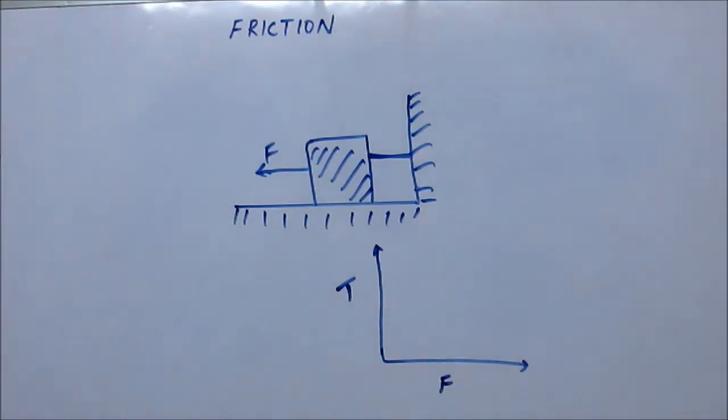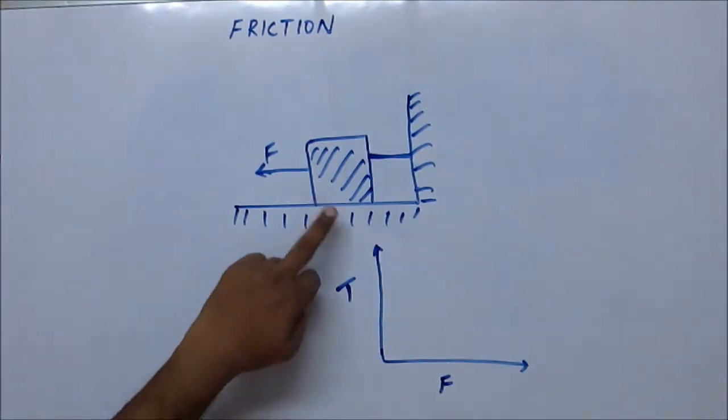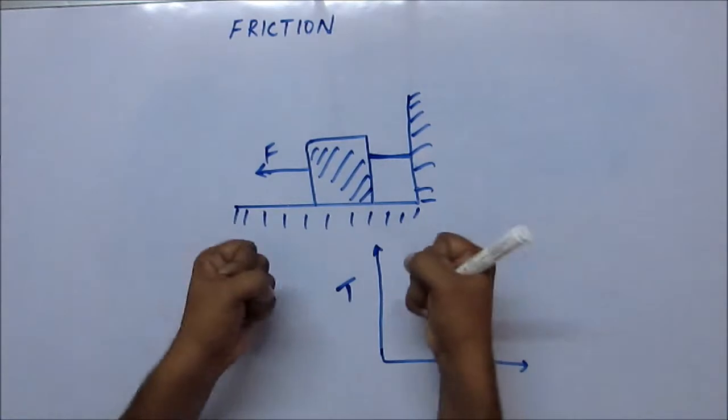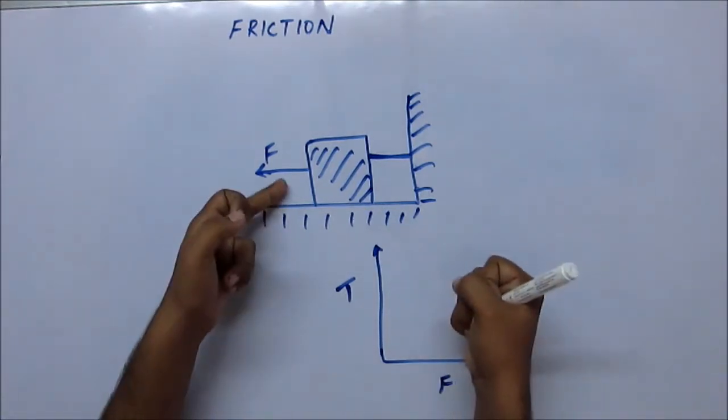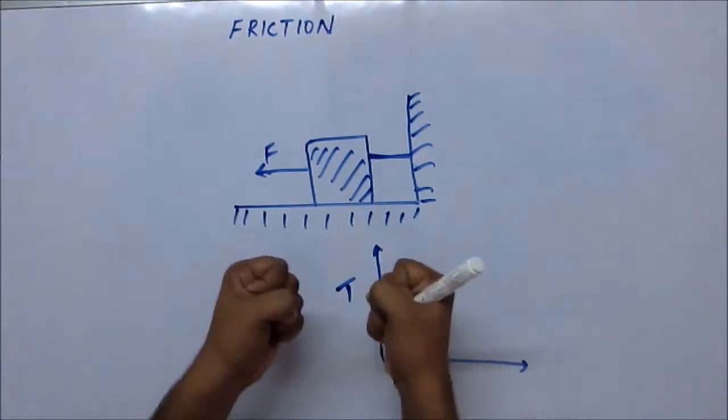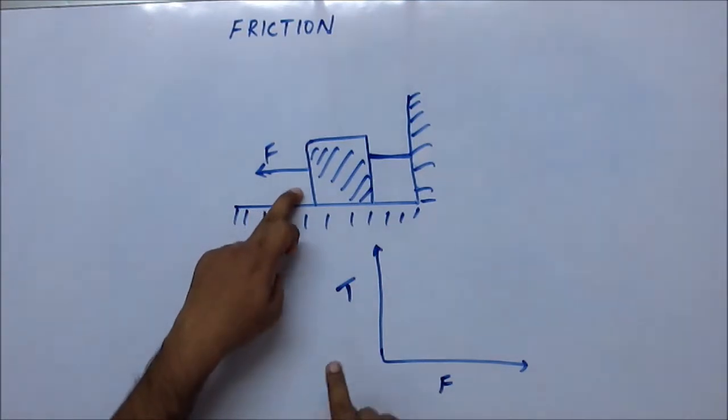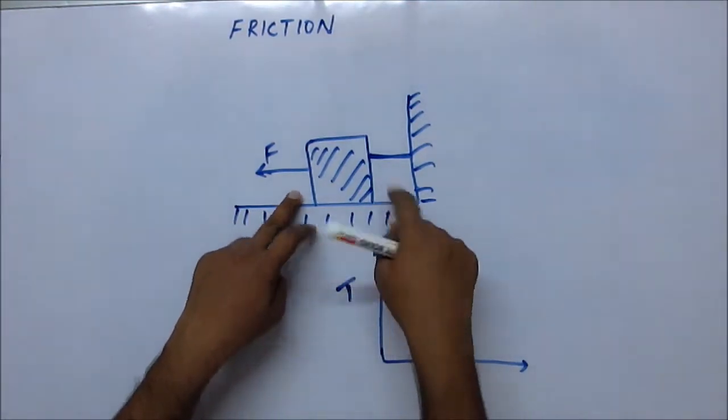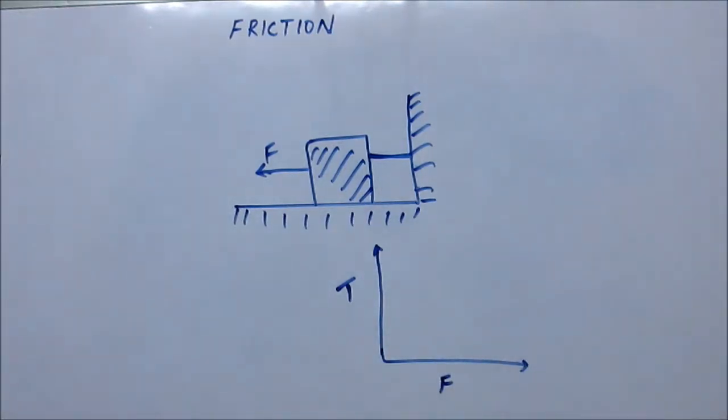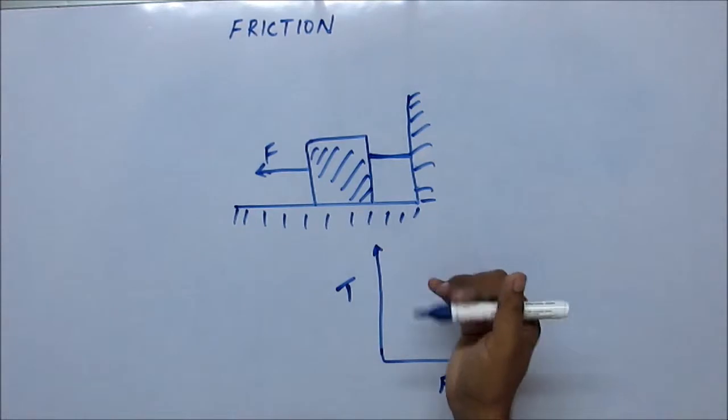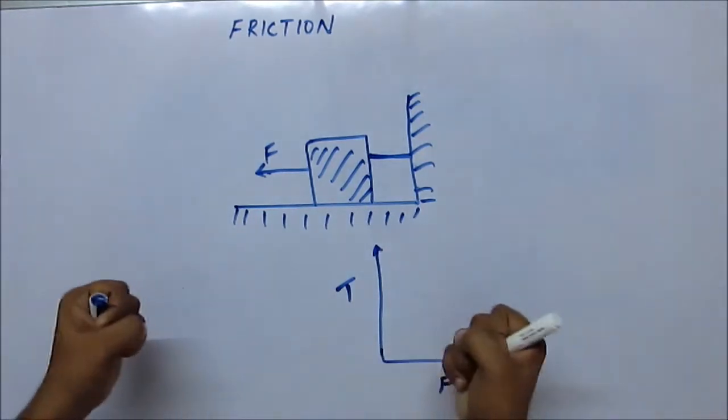The tension will be zero because friction alone... the tension will appear when there is some movement in the block or if there is some stretch in the string. If the block is not moving from its position, if there is no stretch in the string, then the tension will remain zero.